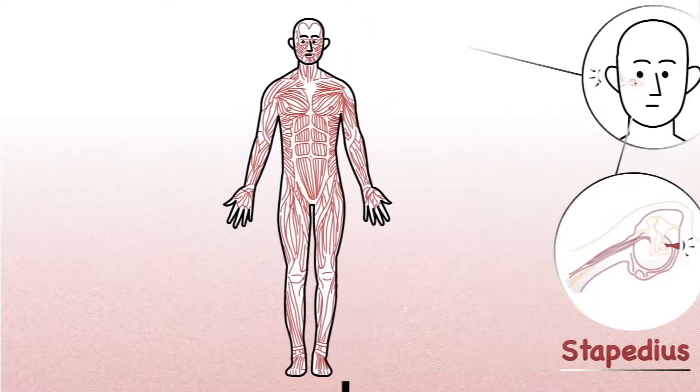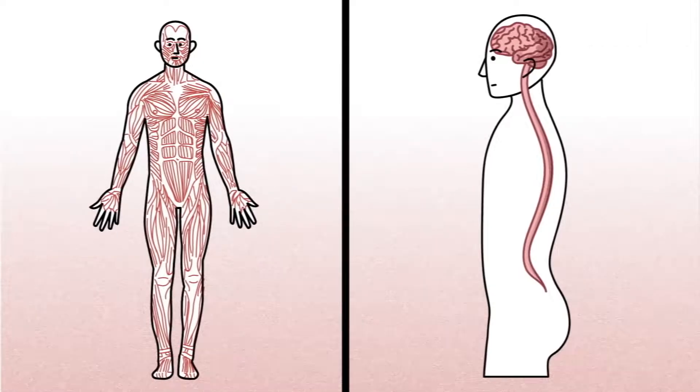Wherever they occur, skeletal muscles are connected to the somatic nervous system, which gives us almost complete control over their movements.